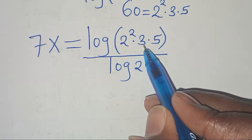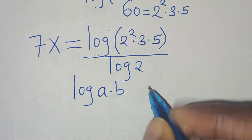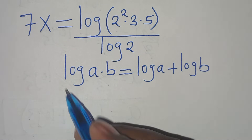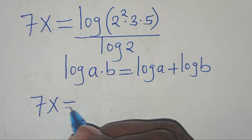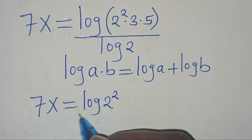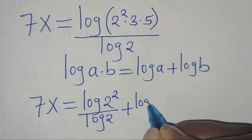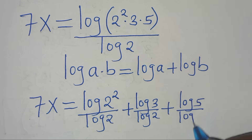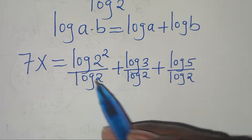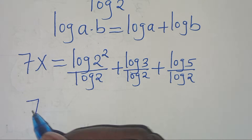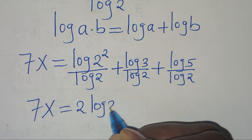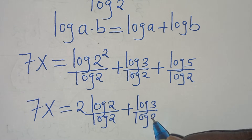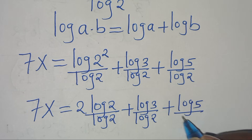Now log of 2 squared times 3 times 5 is in the form of log of a multiplied by b, which we can express as log a plus log b. Applying this logarithm property, we have 7x equals log 2 squared divided by log 2, plus log 3 divided by log 2, plus log 5 divided by log 2.